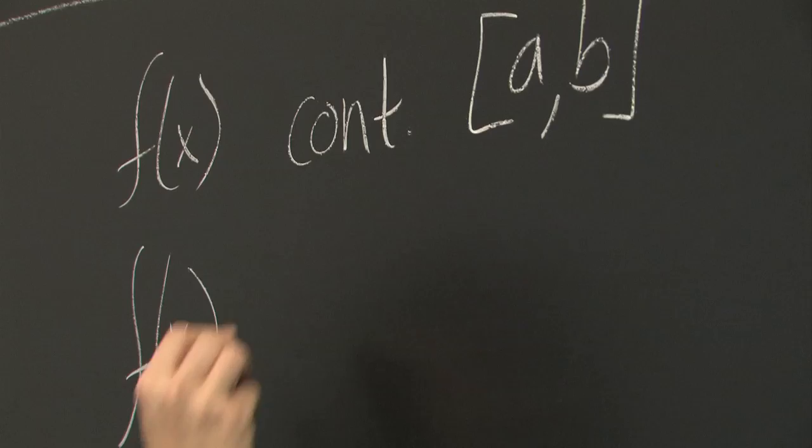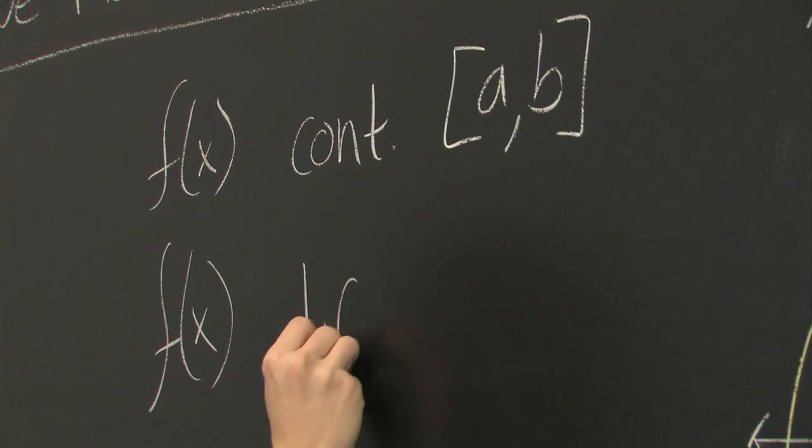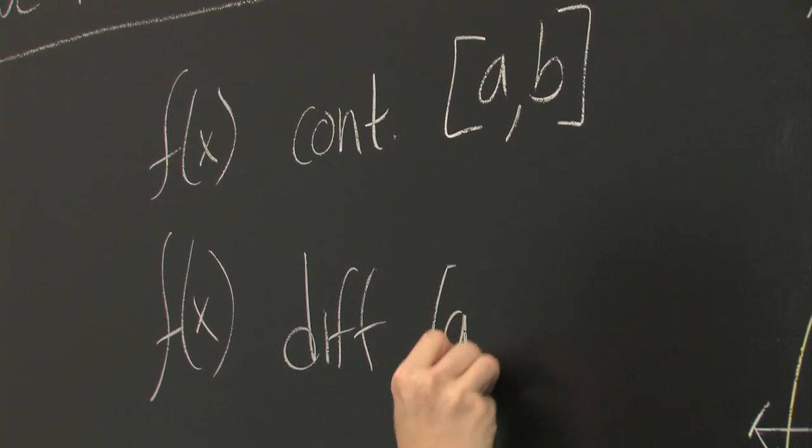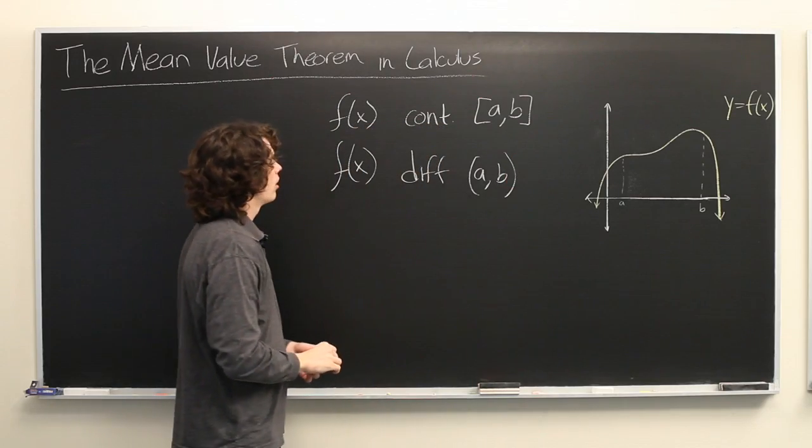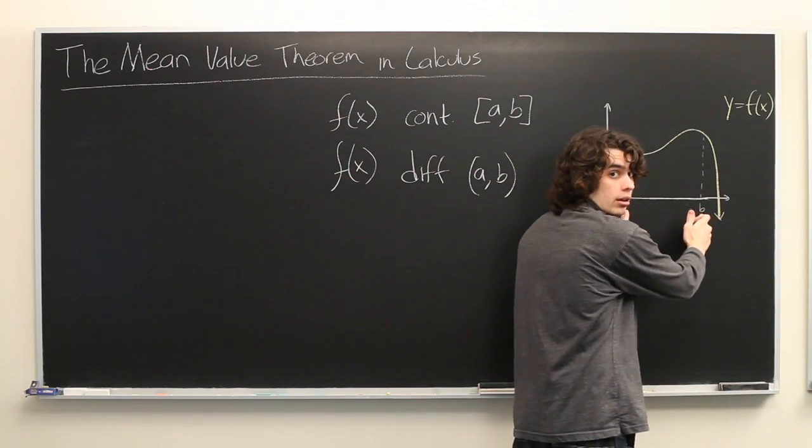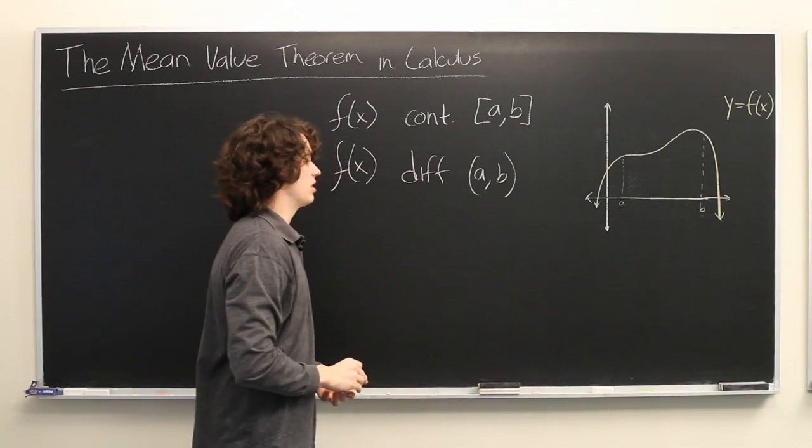Second, f of x must be differentiable on the open interval from a to b. So what this means is that at every point between a and b, the derivative of this function must exist.